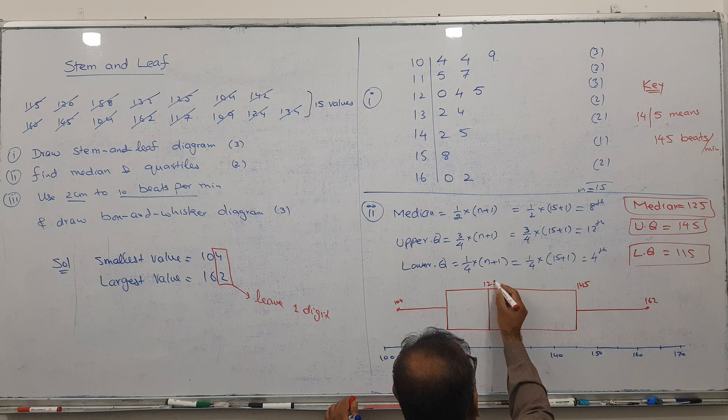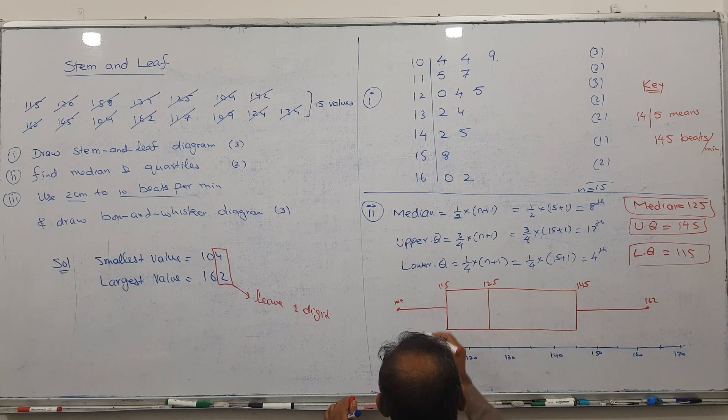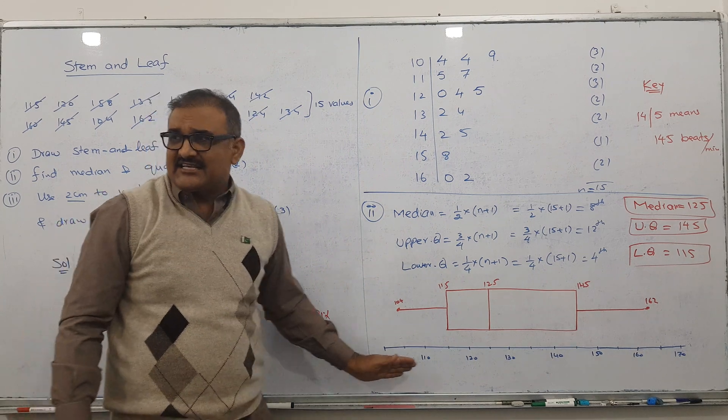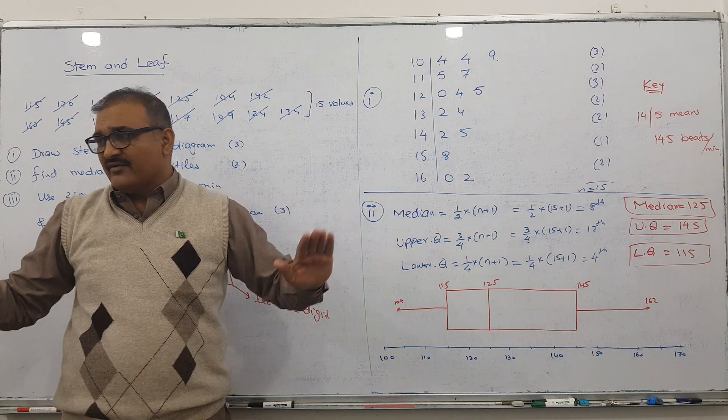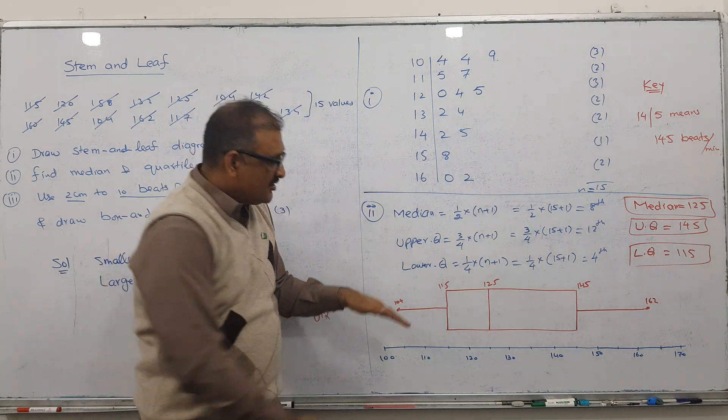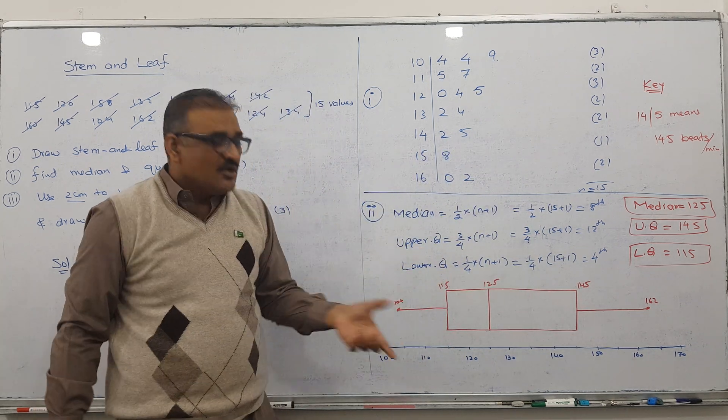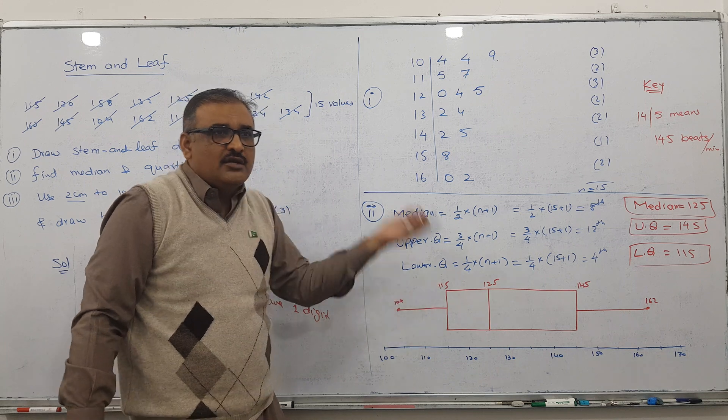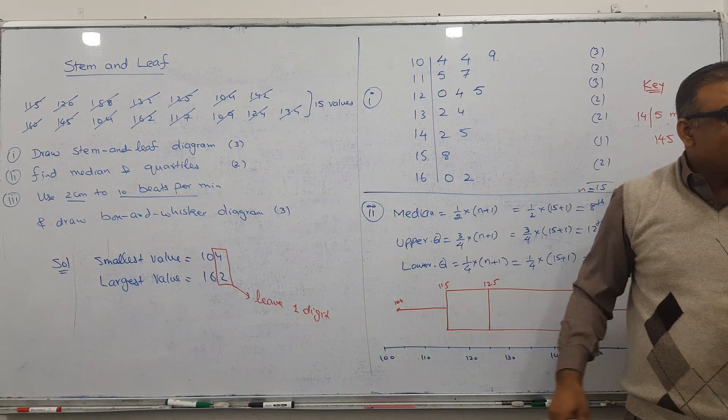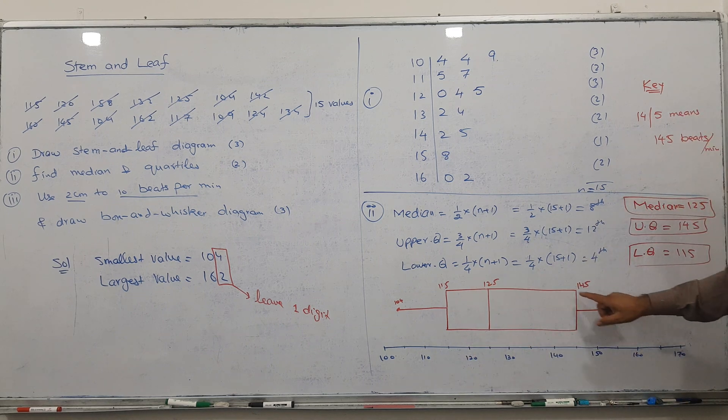This is called box-and-whisker. Now x-axis scale we have, but y-scale we don't have. Make it somewhere here or here or here, no issue. How much wider? No issue. Make it a little wider or less wider, no issue. The only thing is we need five things to show: one, two, three, four, five.